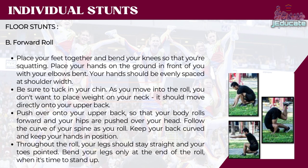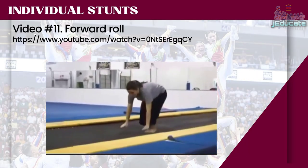Video number 10: Cartwheel. Letter B: Forward roll. Place your feet together and bend your knees so that you're squatting. Place your hands on the ground in front of you with your elbows bent, evenly spaced at shoulder width. Be sure to tuck in your chin. As you move into the roll, you don't want to place weight on your neck — it should move directly onto your upper back. Push over onto your upper back so that your body rolls forward and your hips are pushed over your head. Follow the curve of your spine as you roll. Keep your back curved and your hands in position. Throughout the roll your legs should stay straight and your toes pointed. Bend your legs only at the end of the roll when it's time to stand up. Video number 11: Forward roll.